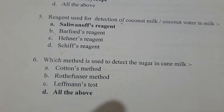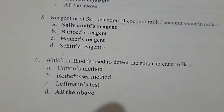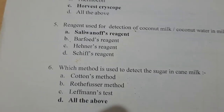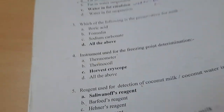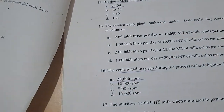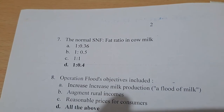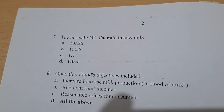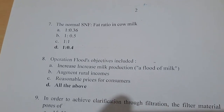Question 4: Other methods related to sugar detection in milk include Rotifusers method and the 11-months test — all of the above are valid. The normal SNF to fat ratio in cow milk is 1:0.4.